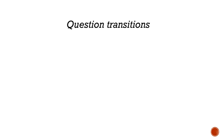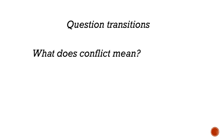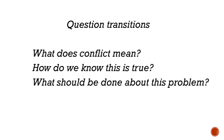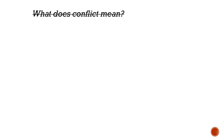There's one type of transition, however, that I don't recommend for formal academic writing, particularly at the graduate level. When you're giving a presentation or in informal writing, it's somewhat common to ask rhetorical questions such as: 'What does conflict mean?' or 'How do we know this is true?' or even 'What should be done about this problem?' In academic writing, however, it's better to use statements instead of questions.